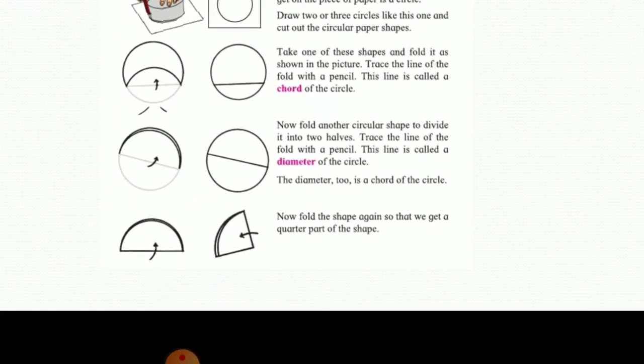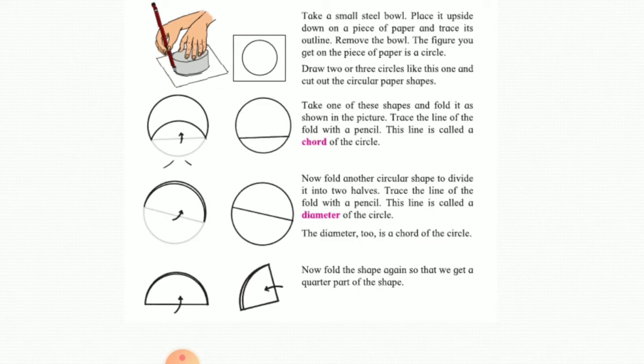Now again, if you fold this circle into two and then you again give one more fold, thus it makes four portions. When you open it, there is a center point. The point in the center is known as the center of the circle.